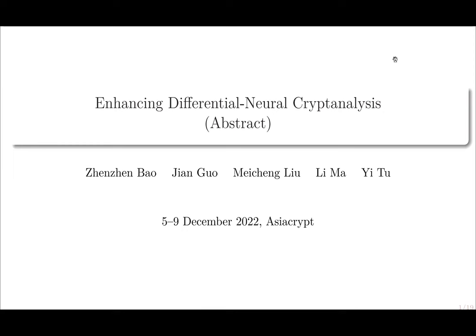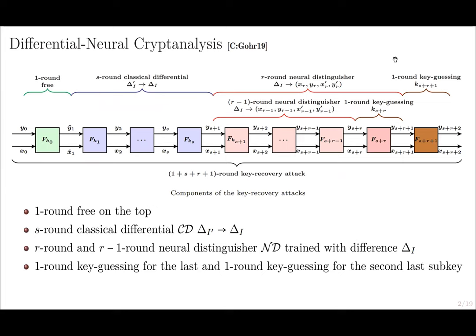Differential neural cryptanalysis was proposed by Gohr in the seminal work at Crypto 2019. In the improved key recovery framework, a classical differential is combined with a neural distinguisher. Besides, a highly selective key guessing strategy was used.